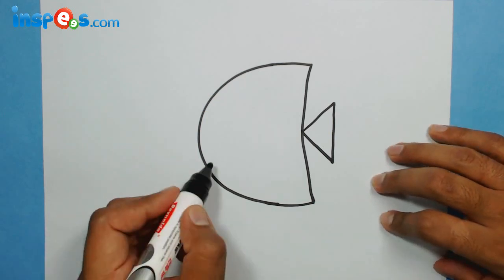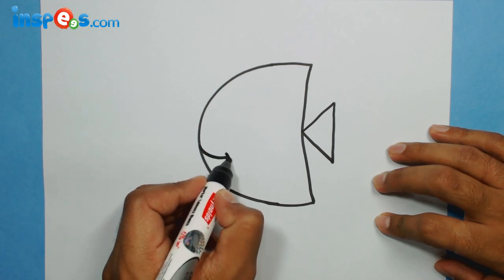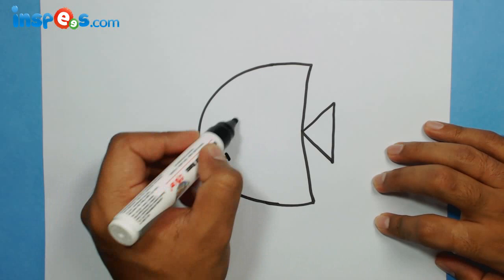And just above it, we need a bigger circle for an eye, so here it is.